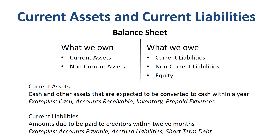To summarize: current assets are cash and other assets that are expected to be converted to cash within a year. Current liabilities are amounts due to be paid to creditors within 12 months.